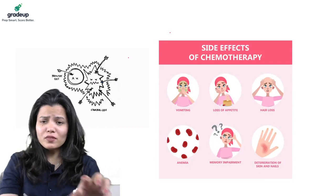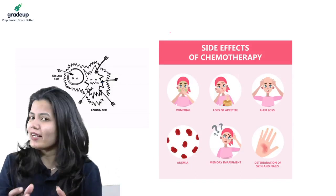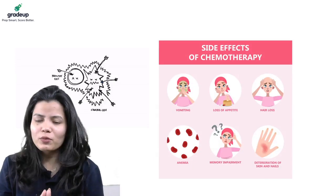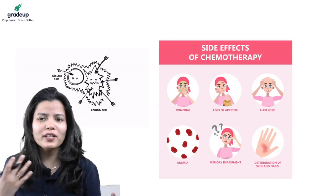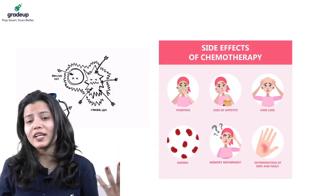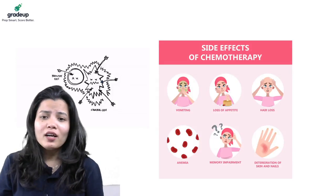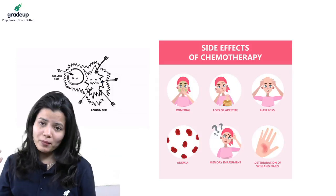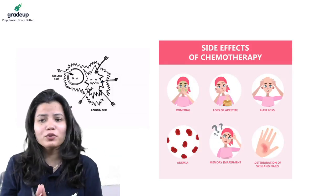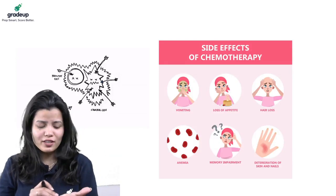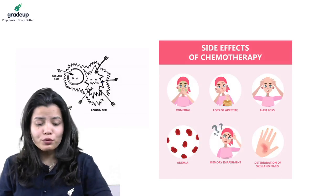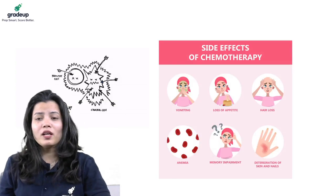These are some of the side effects of chemotherapy: vomiting, loss of appetite, hair loss, and anemia. Memory is also affected. We are now going to discuss why there is such severe hair loss — you can take the example of Sonali Bendre, who experienced severe hair loss.